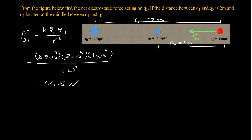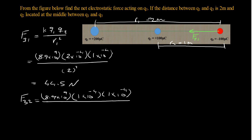Now calculating the force generated by charge q2 on q3. To save time I'll plug in the numbers directly: k times 1×10⁻⁴ times 1×10⁻⁴, divided by 1 meter squared. Doing the math, that gives us 133.5 newtons.